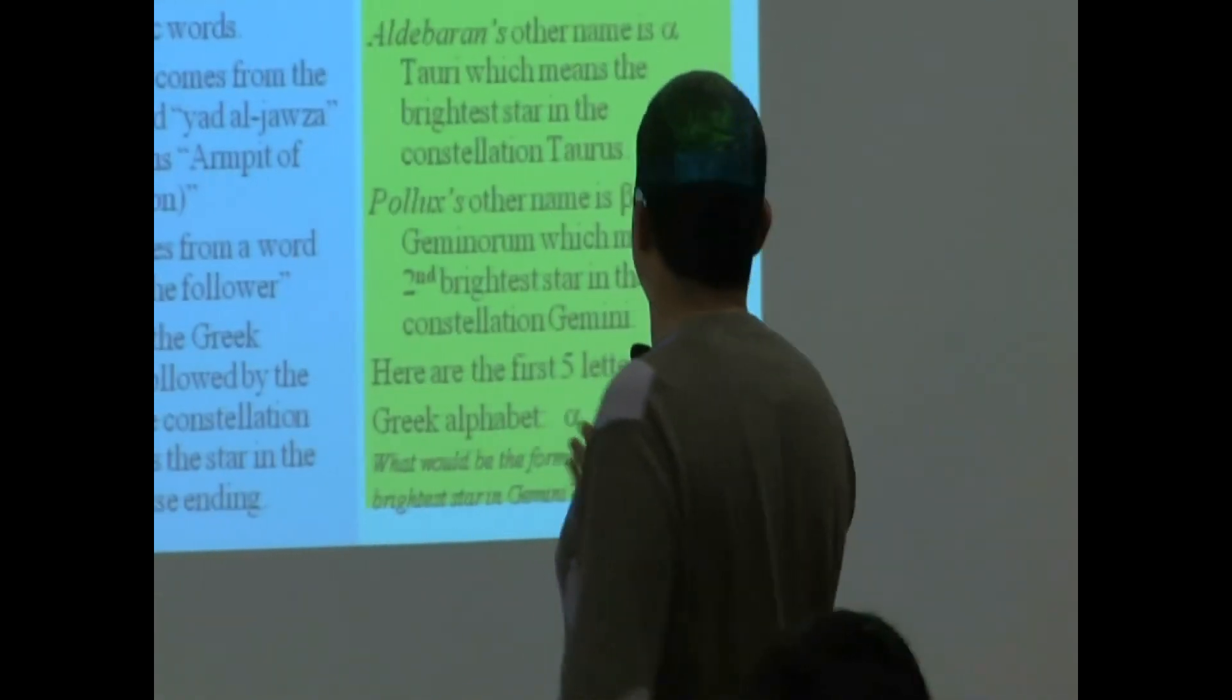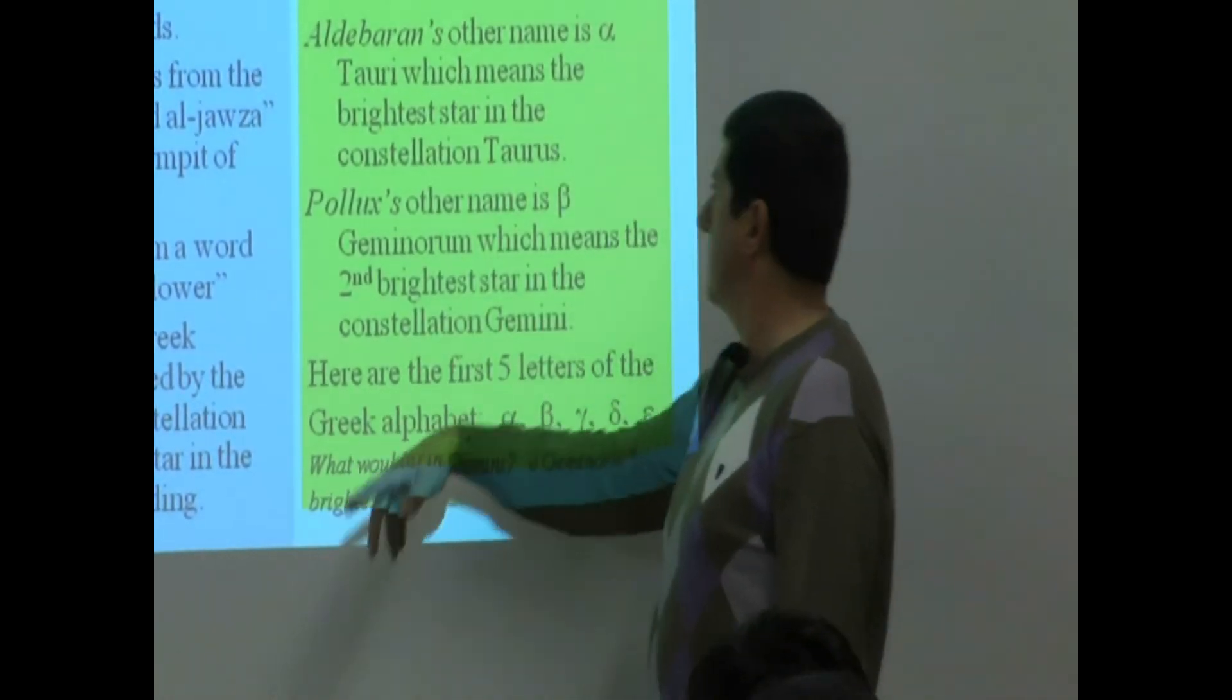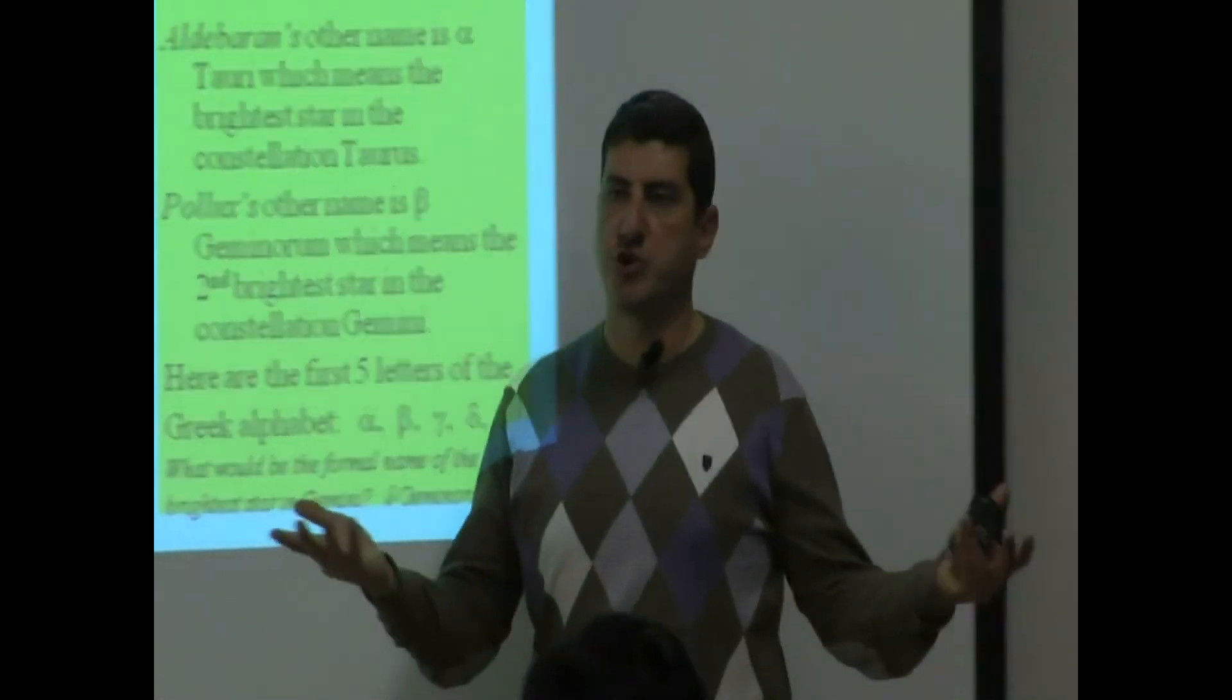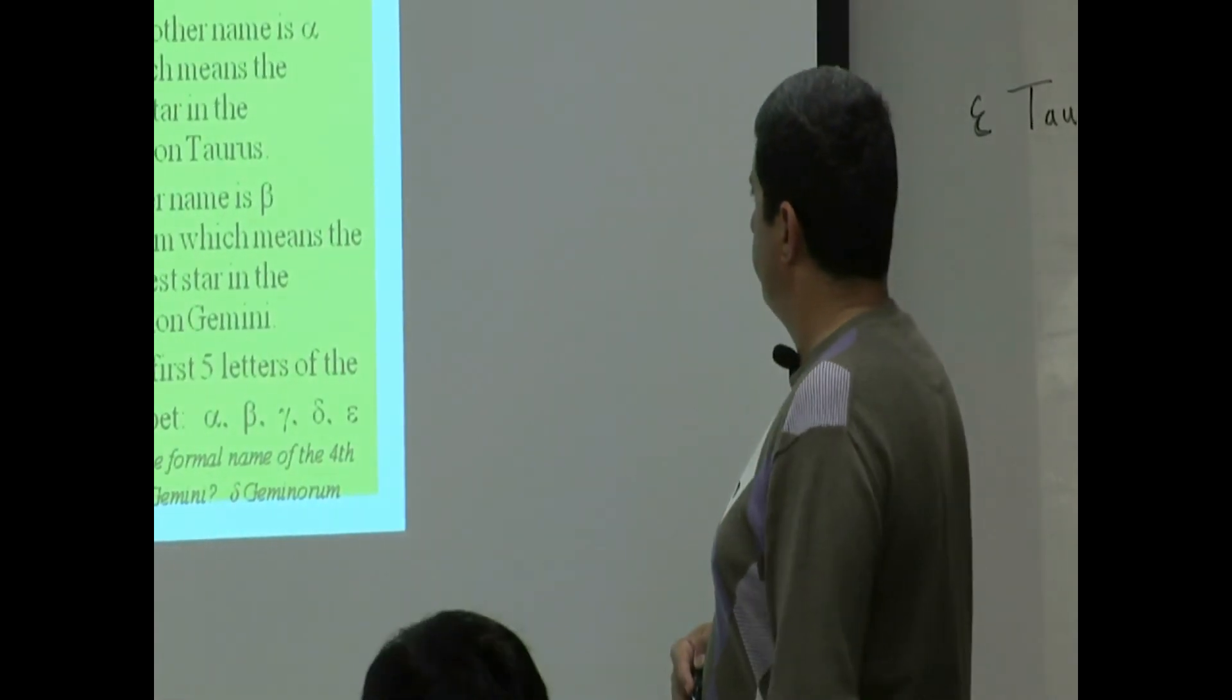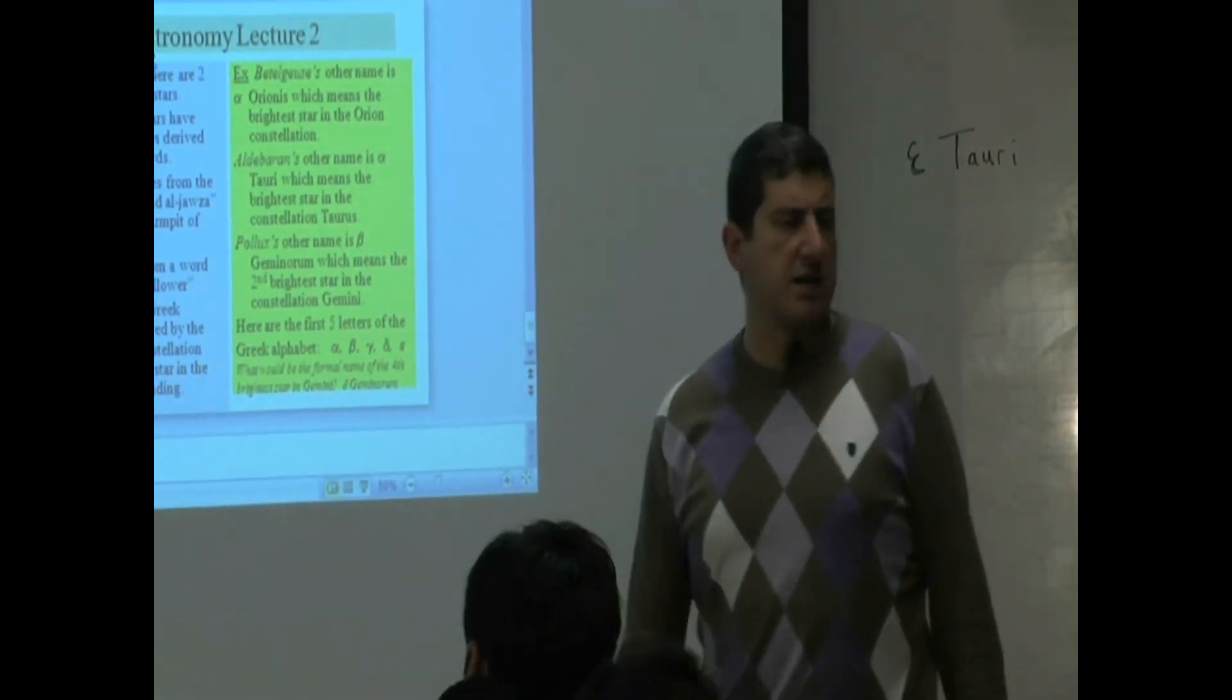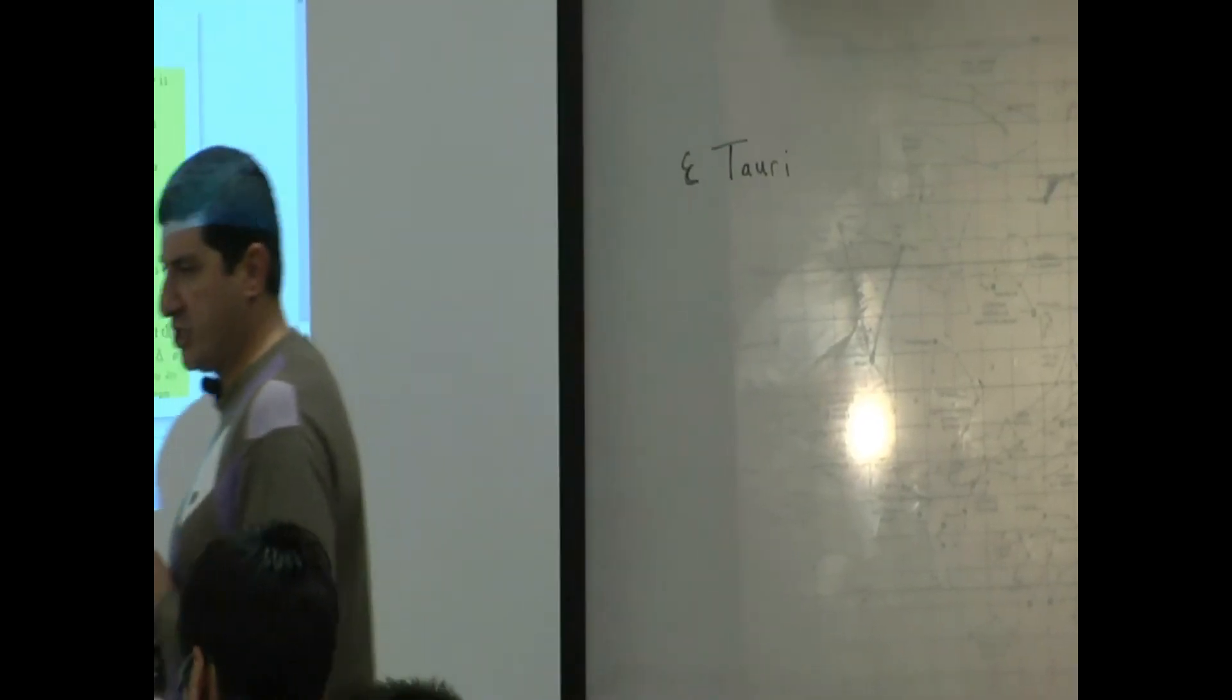So which genitive cases you have to know? You have to know Orion genitive case is Orionis, Taurus is Tauri, Gemini is Geminorum. Those three. If you know those three, I'm not going to ask you other ones, okay? Okay, now let's talk a little bit quickly about what the assignment is, the constellation worksheet assignment.